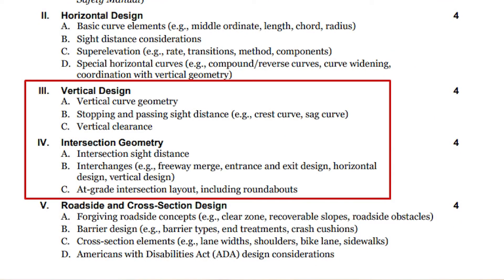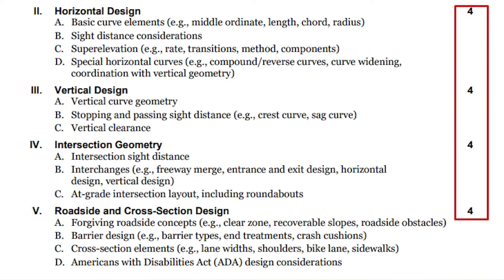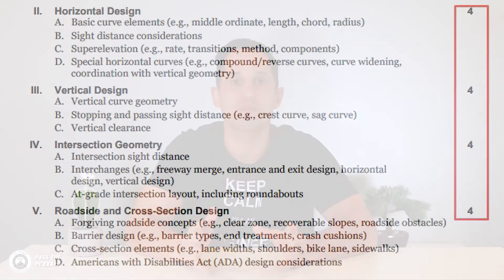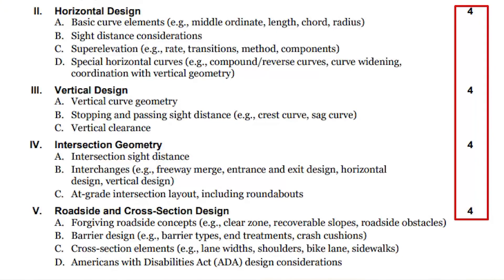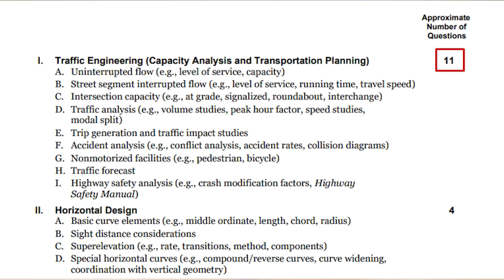If you click on the discipline that you are planning to take, you'll be taken to the exam specifications document that lists the different knowledge areas. For example, some of them for the civil transportation depth exam are vertical design and intersection geometry, just to name a few. You will also see next to each knowledge area the number of questions that will be on the exam. For the civil transportation depth exam, it shows four questions on vertical design, four questions on intersection geometry, and 11 questions on traffic engineering. Being aware of this breakdown prior to beginning your study preparation can help you ensure that you are dedicating enough time and energy to each knowledge area.